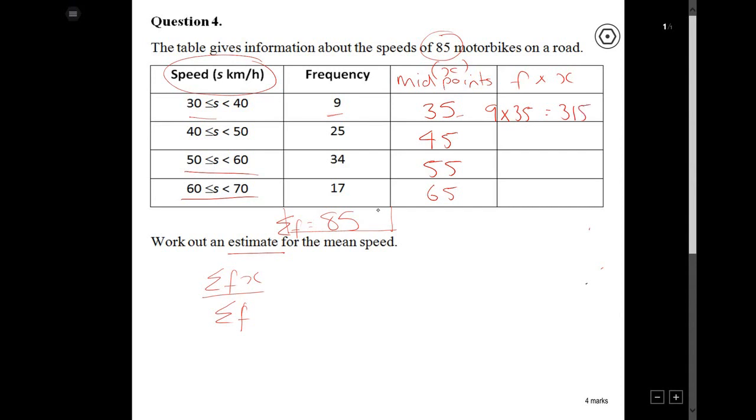This one over here will be, I'll just write in 25 times 45, which is 1125. The one below it, so that would be 34 times 55, which would be 1870. And then finally, we got 17 times 65, which is 1105. Now, if we just include a total box over here, this essentially is my sigma fx. And that's the total of the frequencies times the midpoints. And we should have 4415.